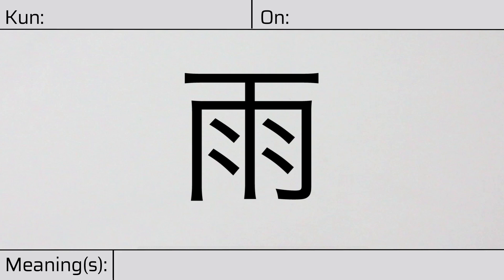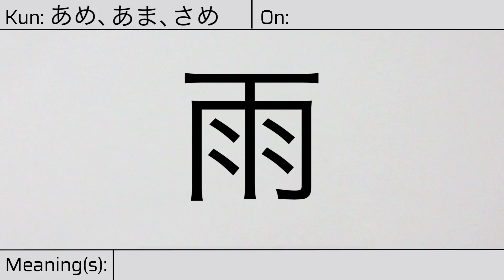Welcome to this lesson on Japanese kanji. Today, we'll be discussing this character. This kanji has a kunyomi, or Japanese readings of ame, ama, or same. And it has an onyomi, or Chinese reading of u. This character has the meaning rain.